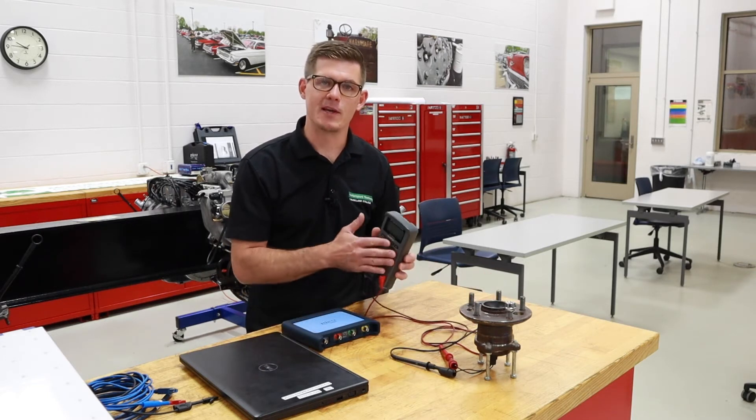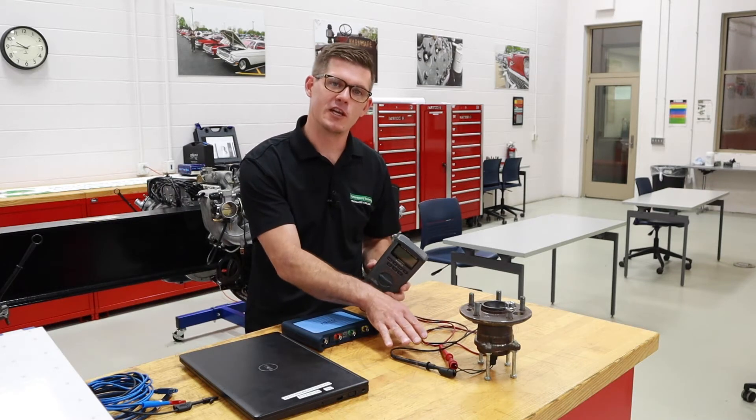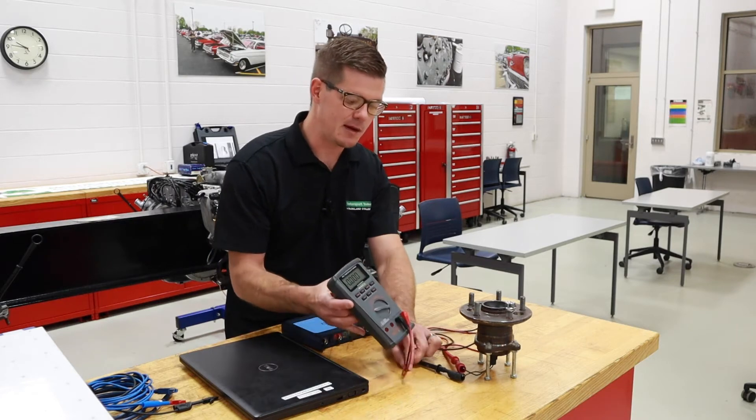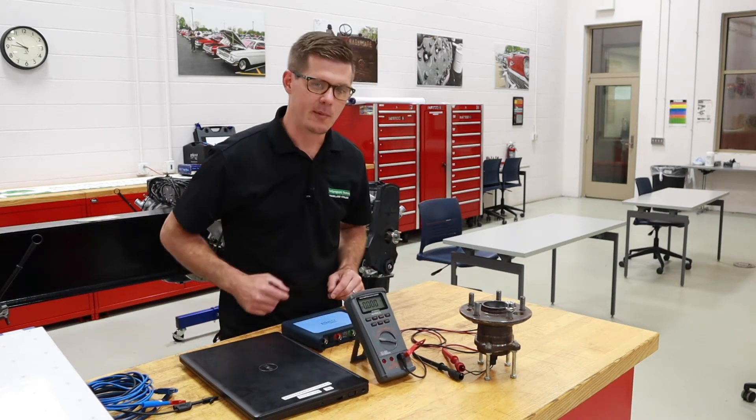The first way that I can do that is with my DVOM, same setup as what I did for resistance. I'm going to go to AC volts on my DVOM and then we've got to get this set up so that we can spin the wheel bearing assembly.